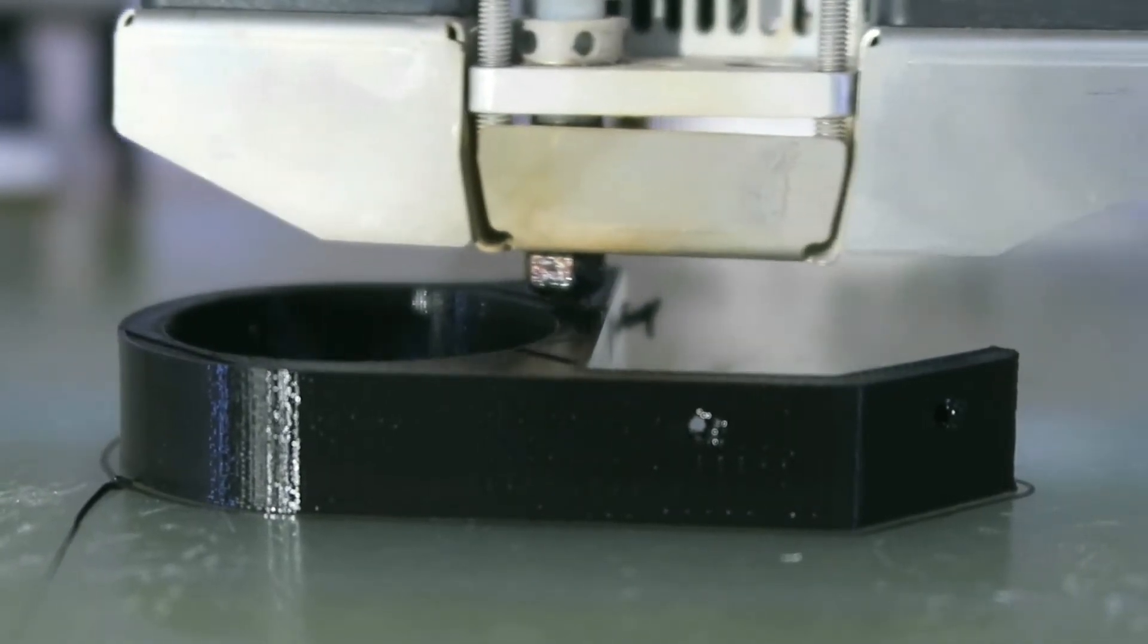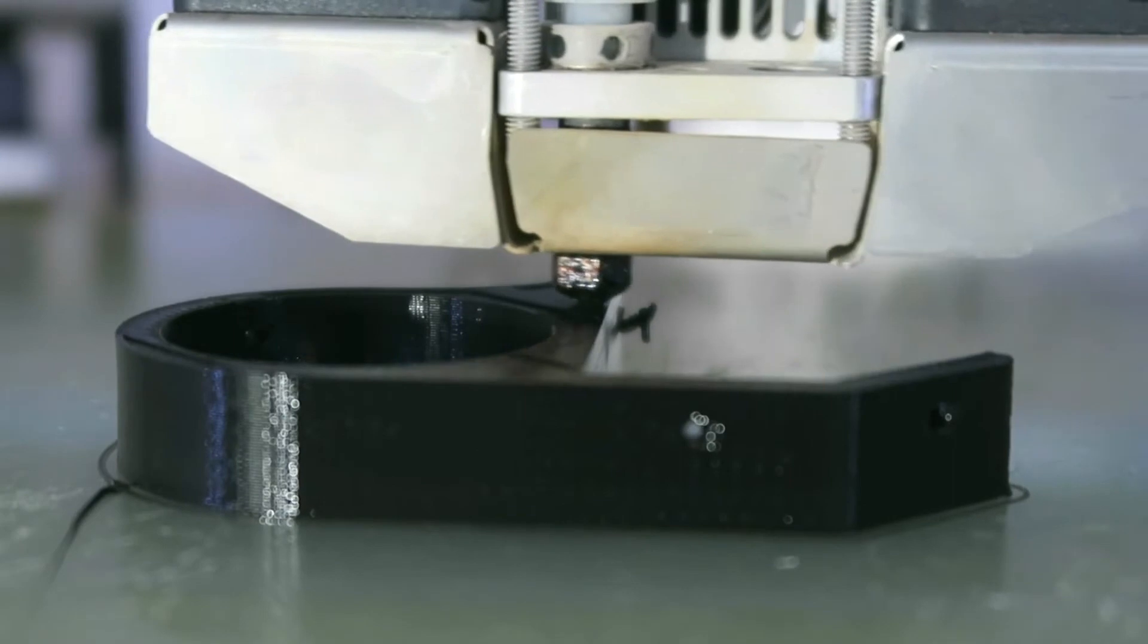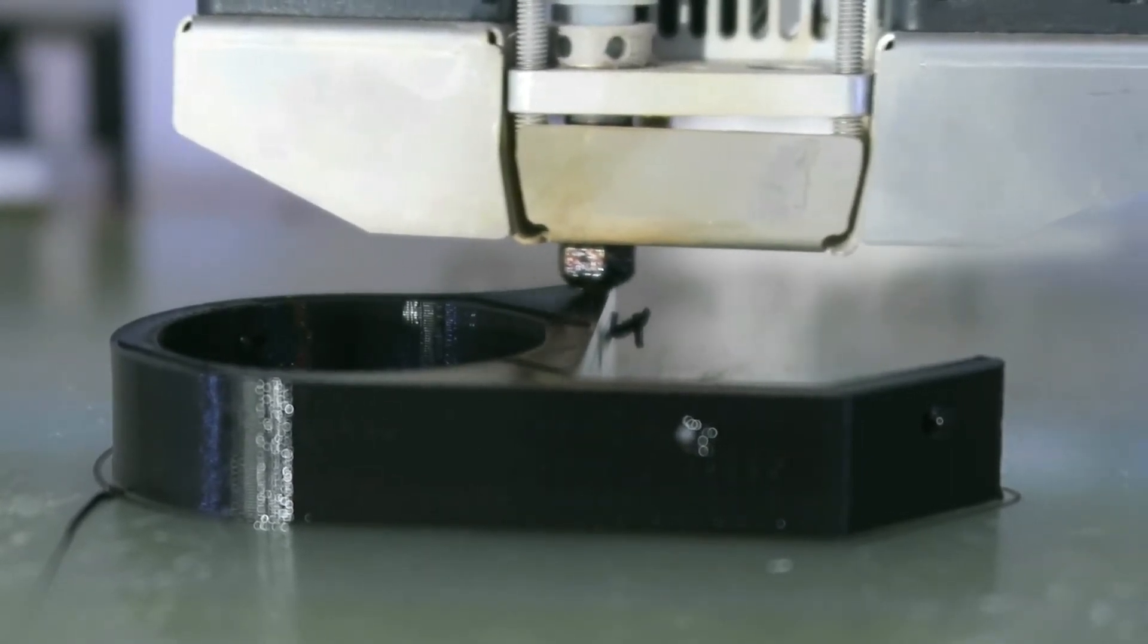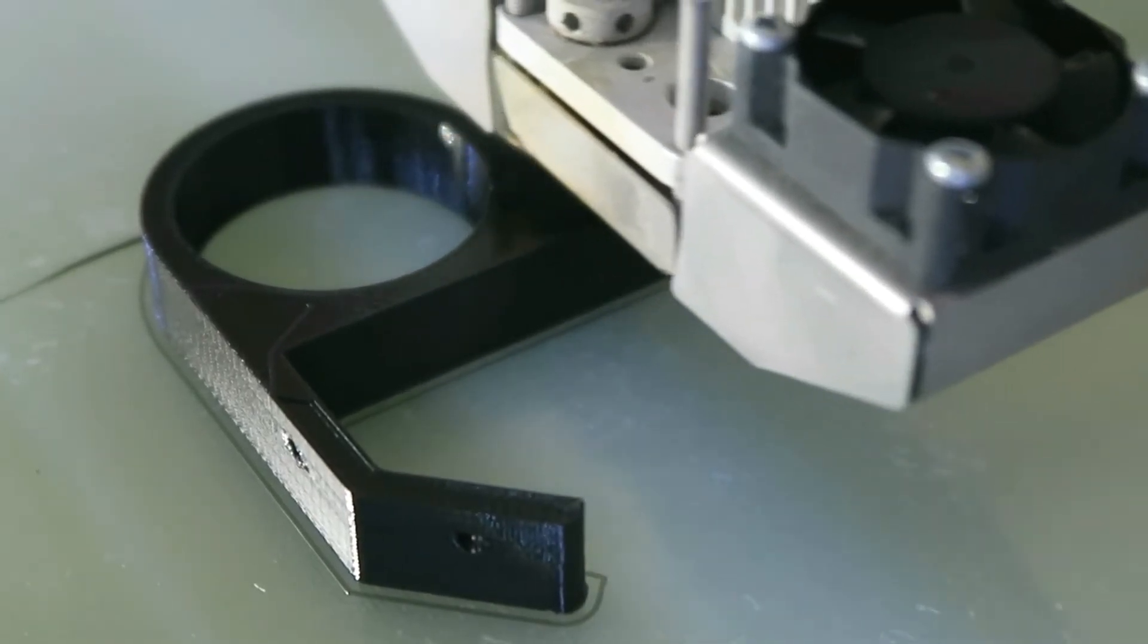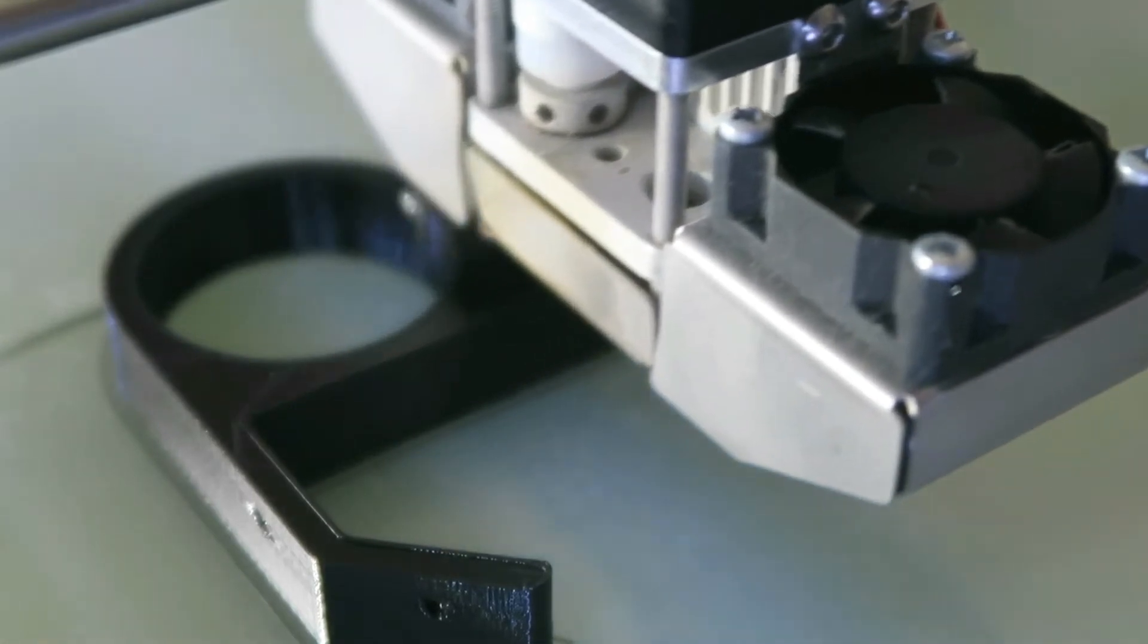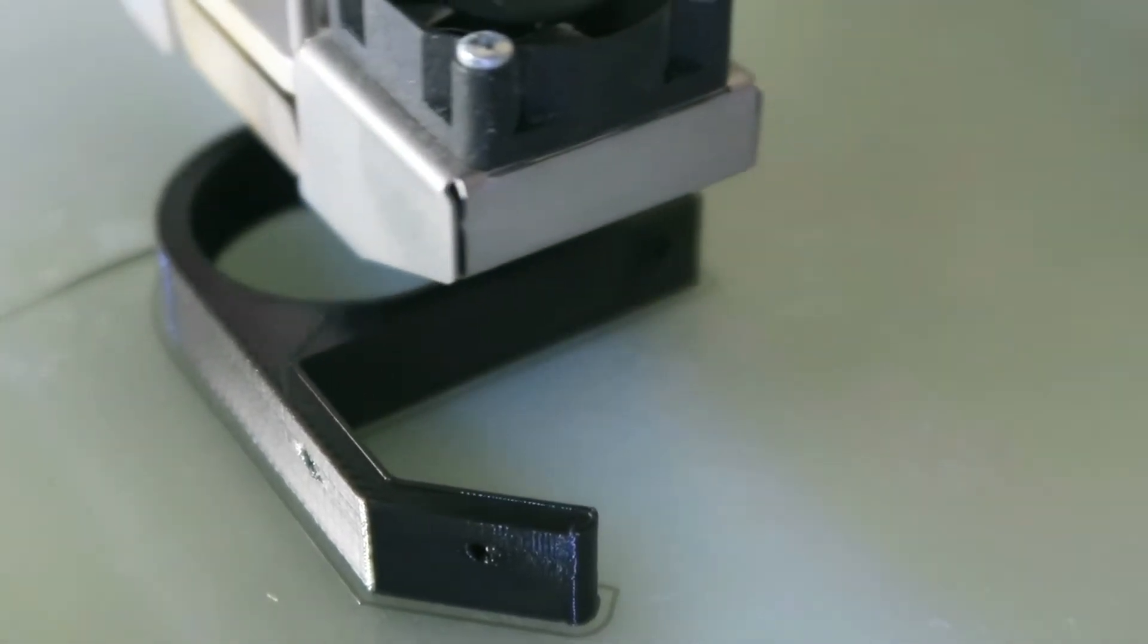From the test print, I also figured out an ideal combination of settings, which includes 235 nozzle temp, 35 millimeters per second speed, and no cooling fan. Also there's 120% material flow going on because there were gaps in the infill at the lower setting, and I need that infill to be solid.